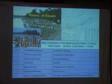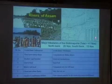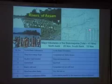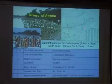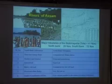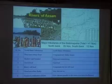This map shows all the names of tributaries — and these are only the tributaries in Assam. We have another six states around here. So you can see so many small tributaries — we have measured 41 in total: 26 on the North Bank and 15 on the South Bank.